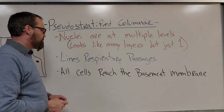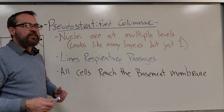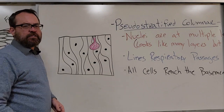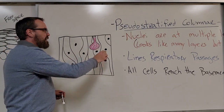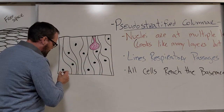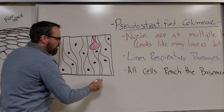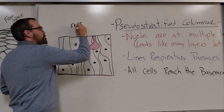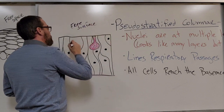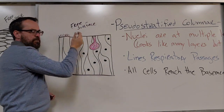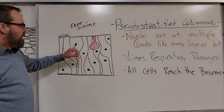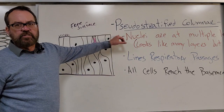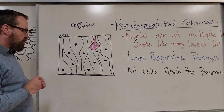We find pseudostratified columnar on the respiratory passageways, and all cells reach the basement membrane. We have goblet cells again. All the cells come down to the basement membrane at the bottom, then they reach up towards the free surface. We still have microvilli or cilia depending on the cell type. All the nuclei are just kind of randomly at lots of different levels — that's how we know this is pseudostratified. Nuclei just kind of everywhere — pseudostratified.